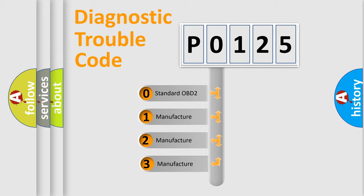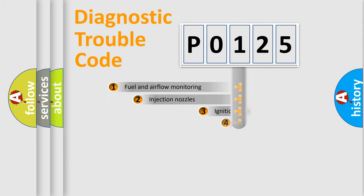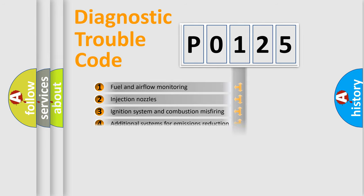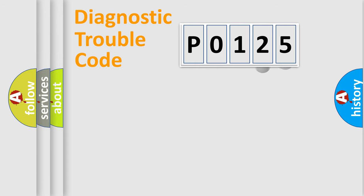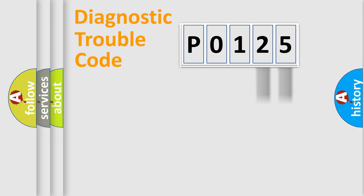If the second character is expressed as 0, it is a standardized error. In the case of numbers 1, 2, or 3, it is a more specific expression of a car-specific error. The third character specifies a subset of errors. This distribution is valid only for the standardized DTC code, and only the last two characters define the specific fault of the group.